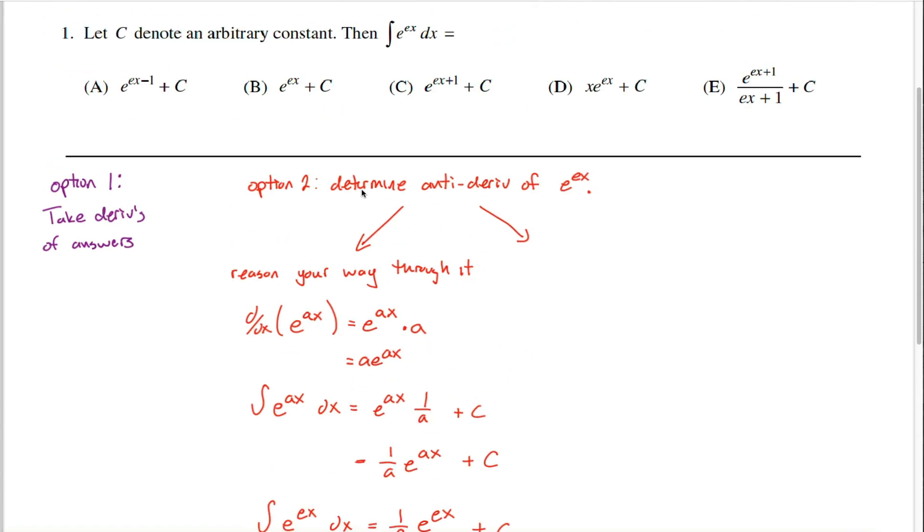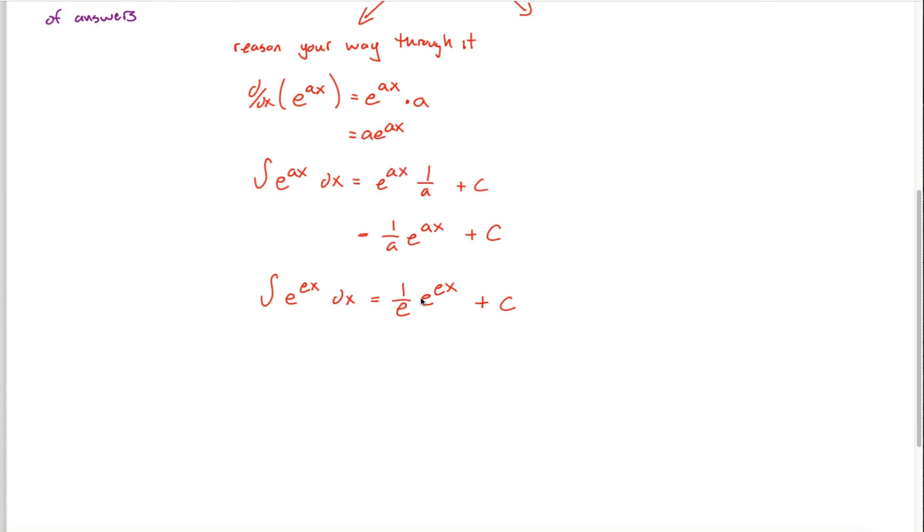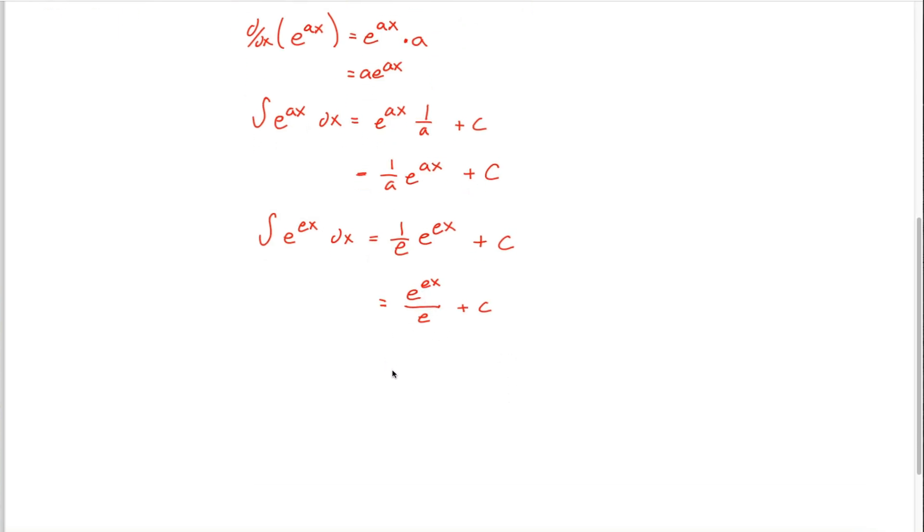Unfortunately, if you look for this in these answers, you won't see it because it's written in a different form. Instead of 1 over e times e to the ex power, they want you to think about it as e to the ex power divided by e plus our constant c. When it's written in this format, maybe you can recognize that there's an exponent rule going on here.